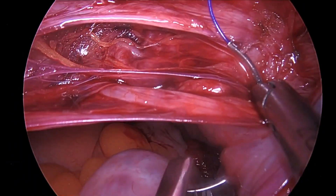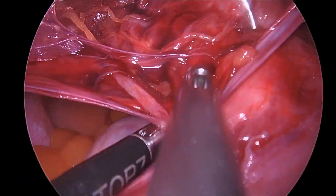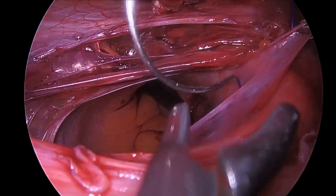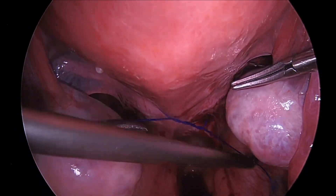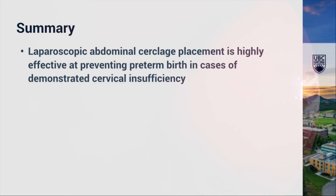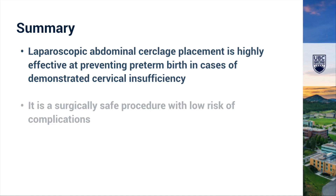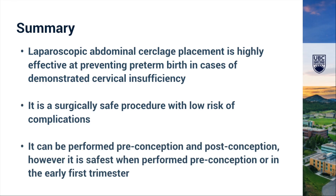Tying the suture posteriorly allows for ease of suture removal with a posterior colpotomy in the event that the uterus requires evacuation, for example in second trimester pregnancy loss. In summary, laparoscopic abdominal cerclage placement is highly effective at preventing preterm birth in cases of demonstrated cervical insufficiency. It is a surgically safe procedure with a low risk of complications and it can be performed pre-conception and post-conception. However, it is safest when performed pre-conception or in the early first trimester.